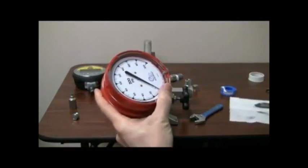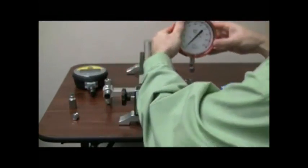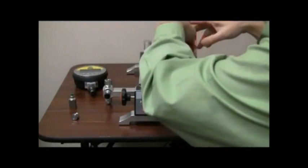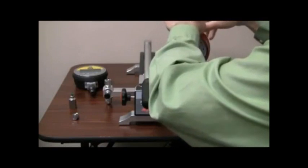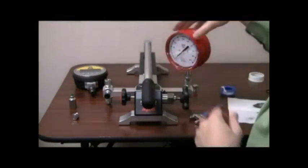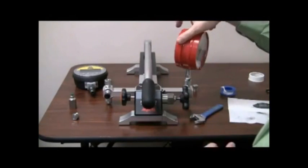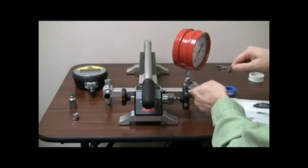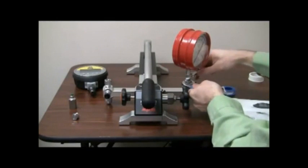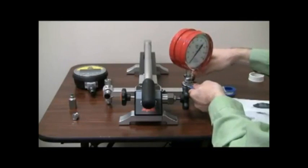I'm now going to install the gauge hand-tight on the comparator. Using a backup wrench, you can use a three-quarter inch crescent wrench or 19 millimeter, barely tightening the gauge so it has a good seal.